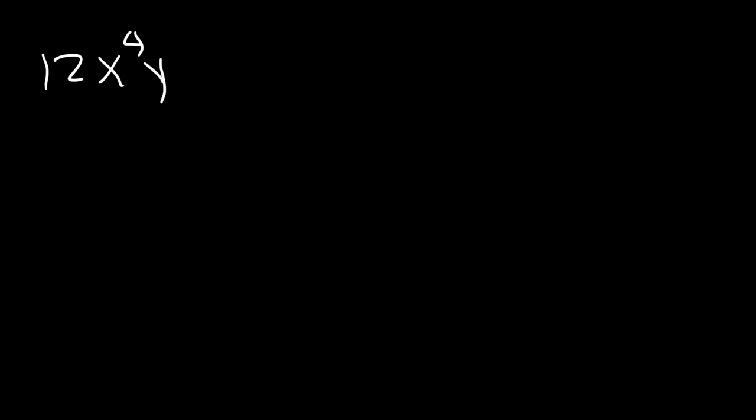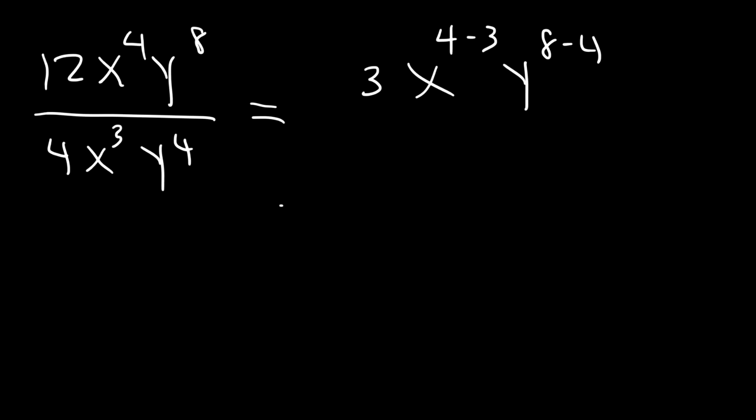Go ahead and divide these two binomials together. 12x to the 4th, y to the 8th, divided by 4x cubed, y to the 4th. 12 divided by 4 is 3. And then we have x, 4 minus 3, and then y, 8 minus 4. 4 minus 3 is 1, 8 minus 4 is 4. So we can write it as 3x, y to the 4th.